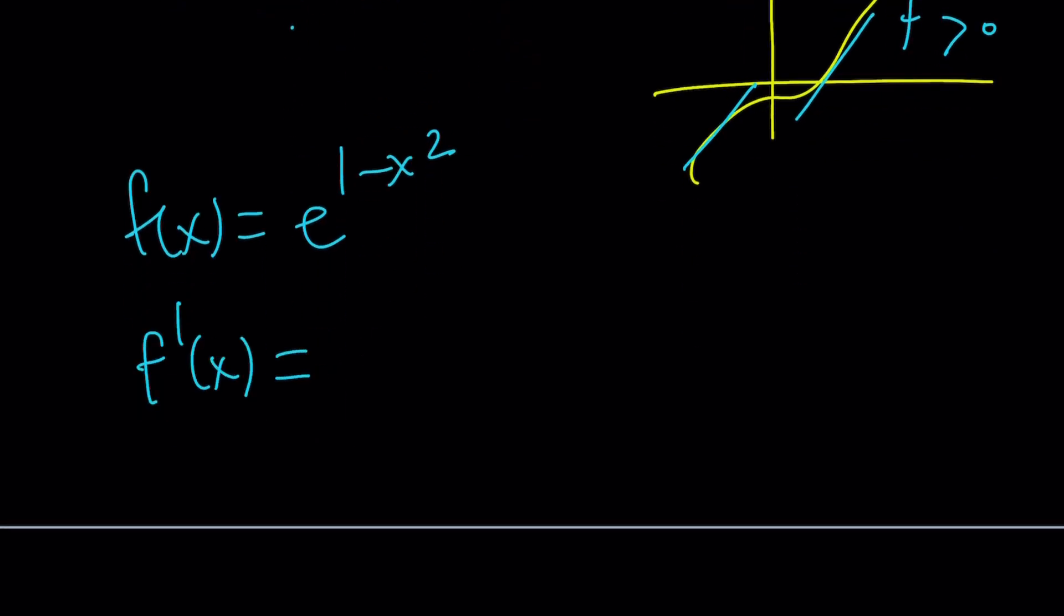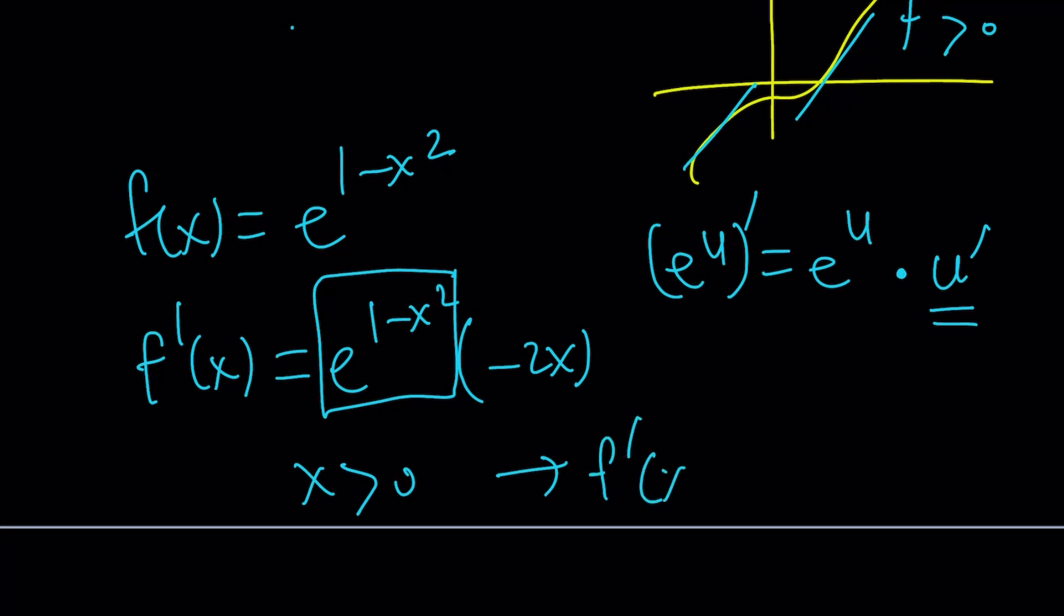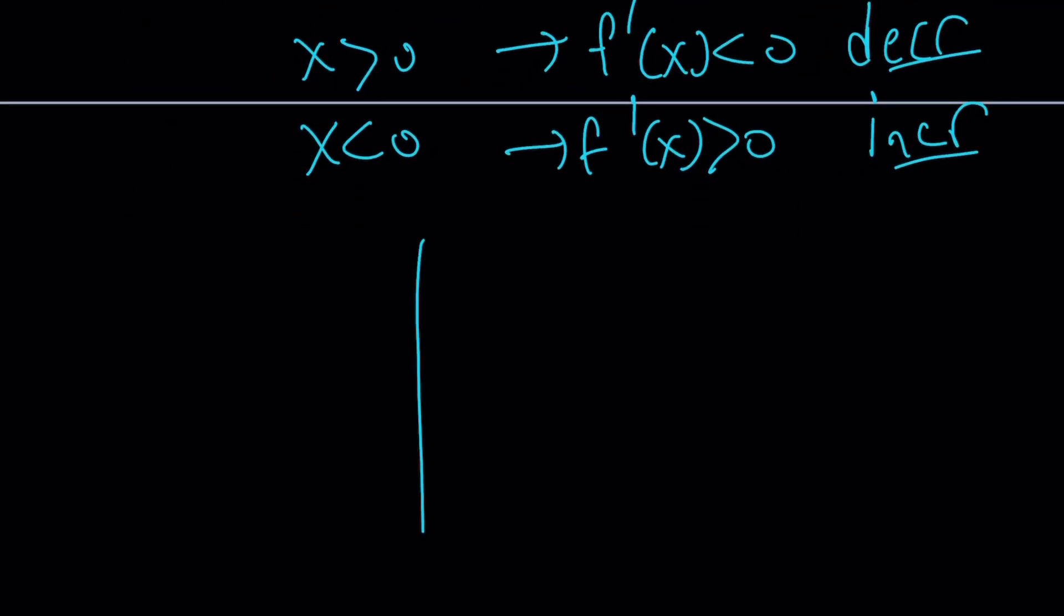To differentiate e to the power some function u, it's e^u times u prime from the chain rule. So it's going to be e^(1-x²) multiply by negative 2x. f prime is not always positive or negative, it depends on the sign of x. If x is positive, f prime is going to be negative. If x is negative, f prime is going to be positive. Our function is going to be decreasing for positive x values and increasing for negative x values.